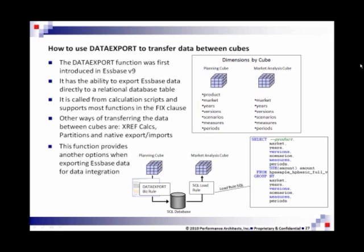So in this example, in the diagram here, you have a planning cube and you come out of planning with the data export. And then right away, you come back into the market analysis cube with a SQL load rule. And we actually called out the SQL and it says, basically select everything off that table, summarize the amount, drop out the product dimension, and group by everything else. So if you do a level zero export out of planning, you actually transfer it to the other cube and dynamically summarize it on the way in.